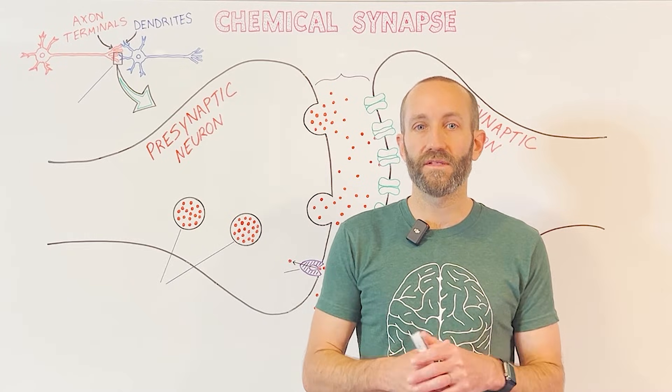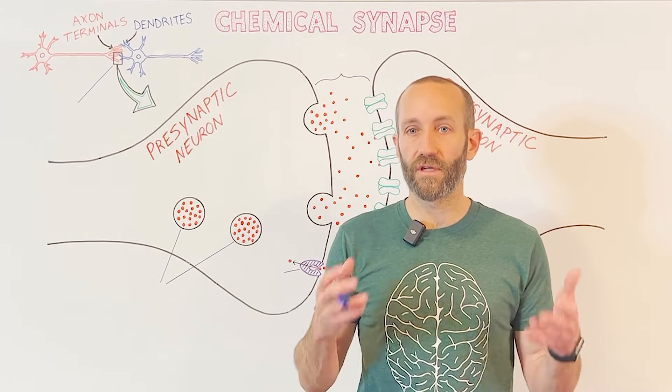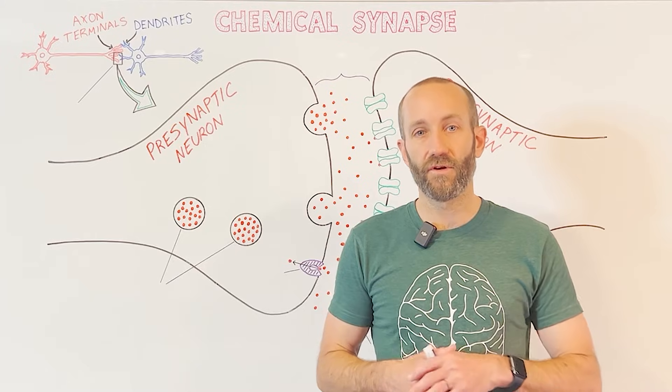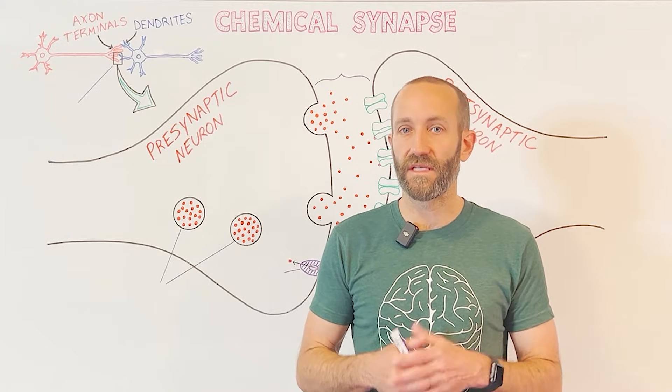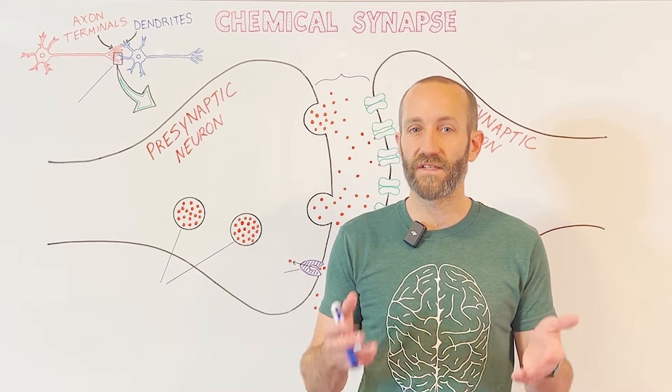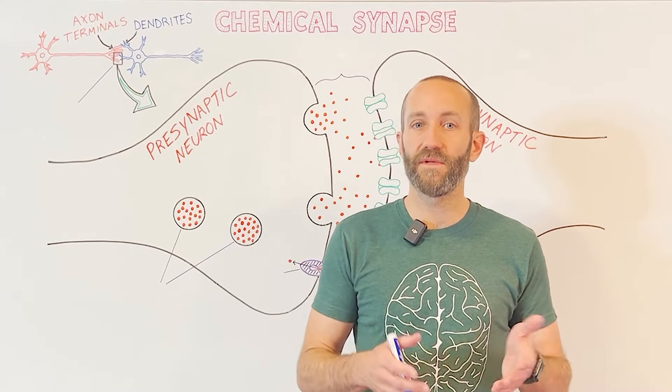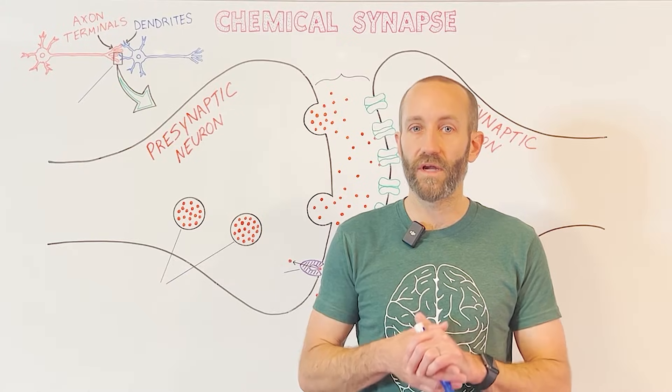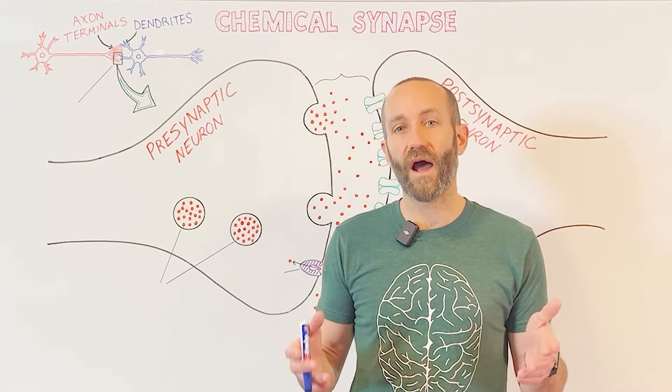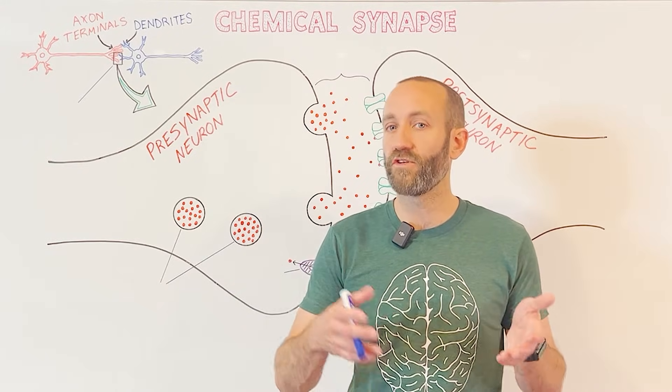A synapse is a region where two neurons come close enough to one another that they're able to communicate. This capacity for neural communication is one of the key things that gives the nervous system its diverse and impressive capabilities. It's thought that most neurons have thousands of synapses, and although estimates for the total number of synapses in the human brain vary, they're always extremely high, ranging from hundreds of trillions to over two quadrillion.